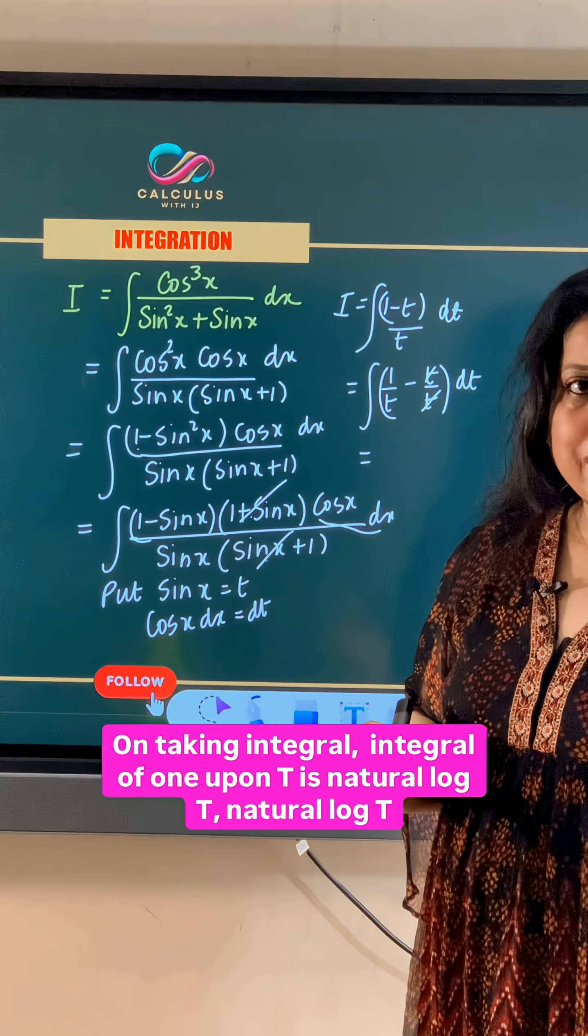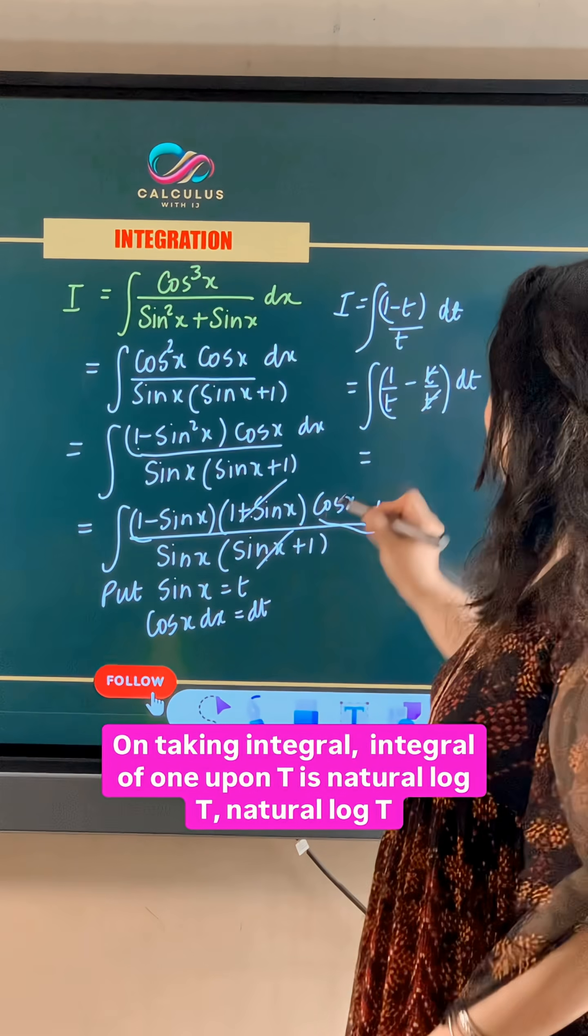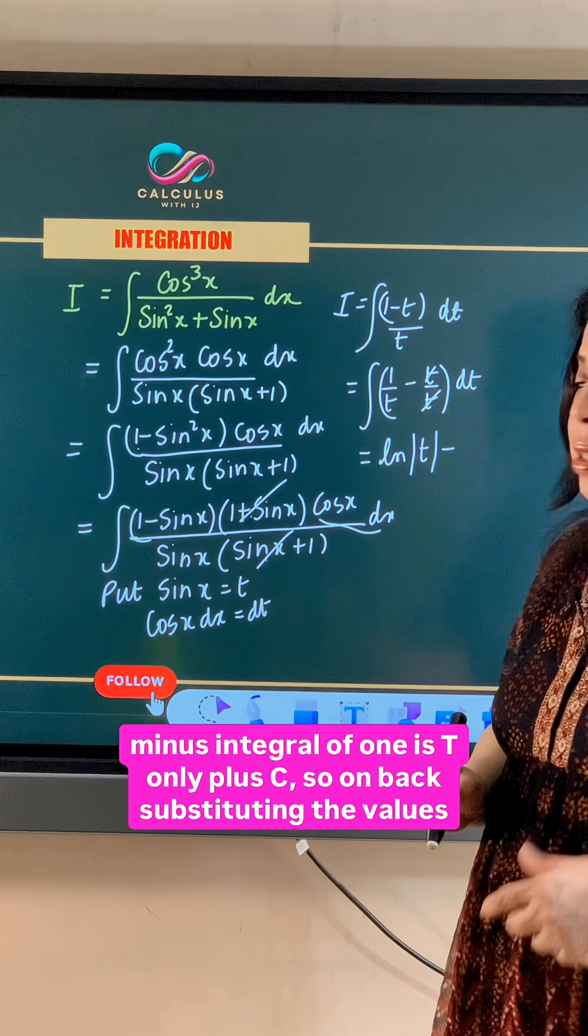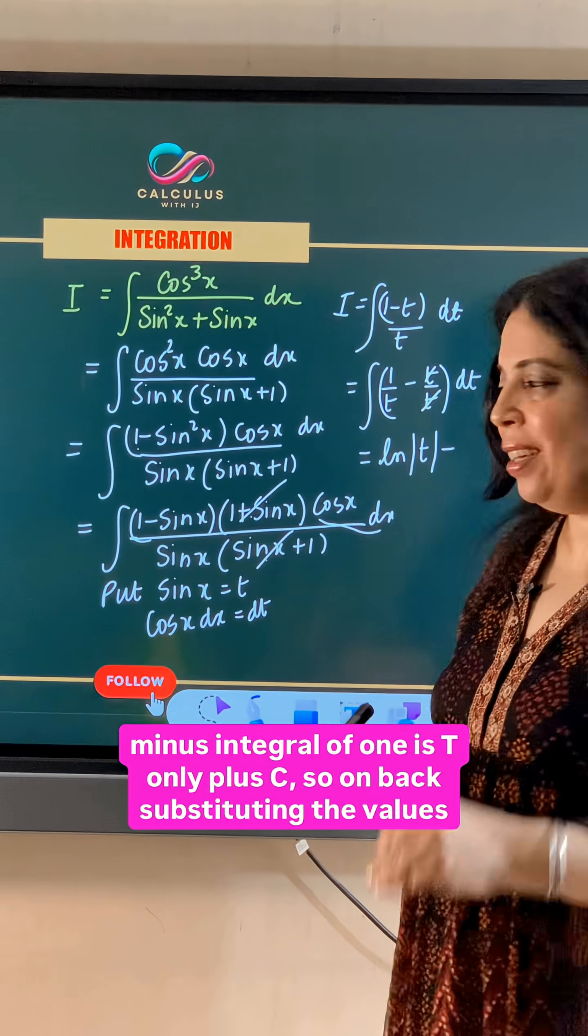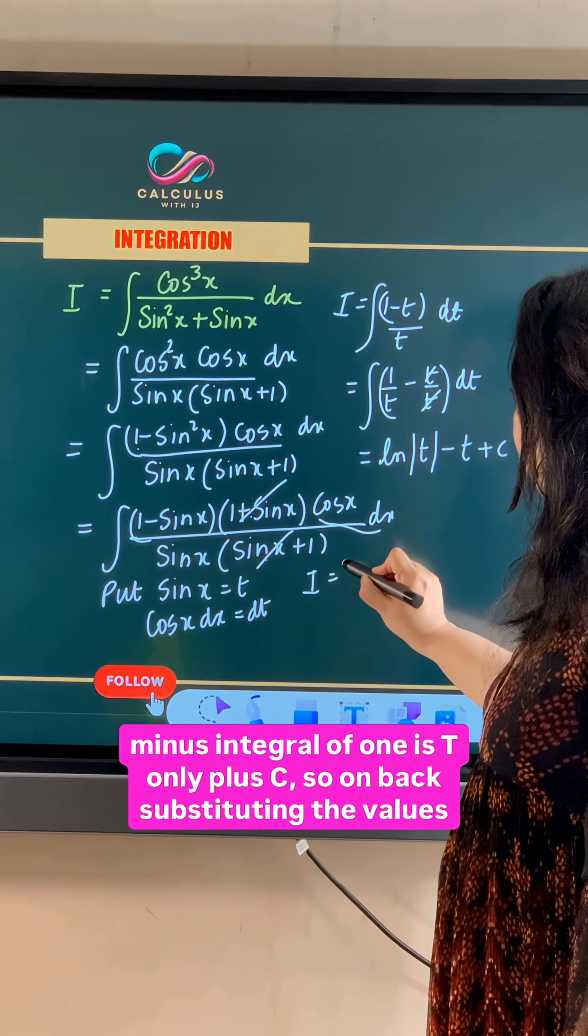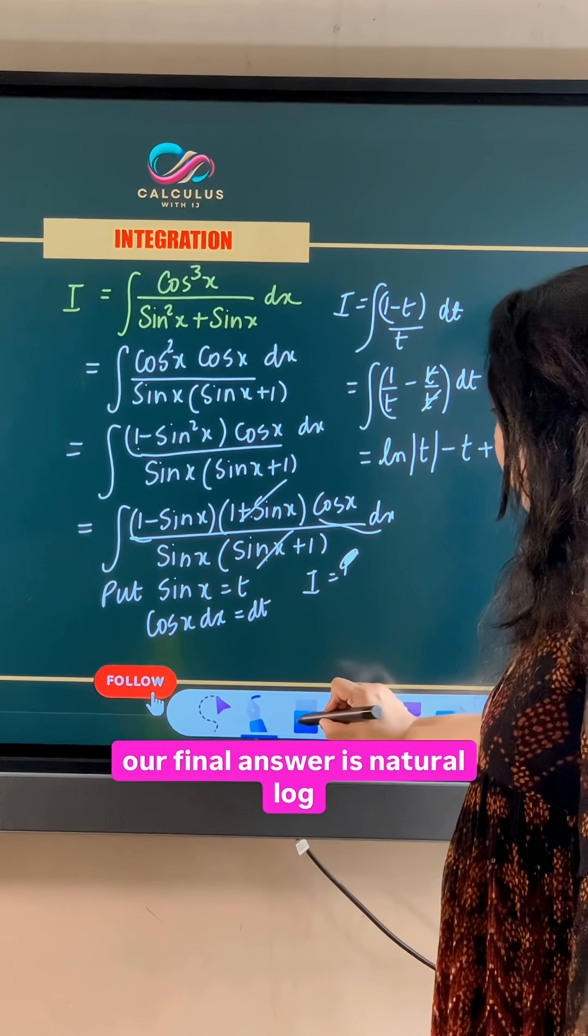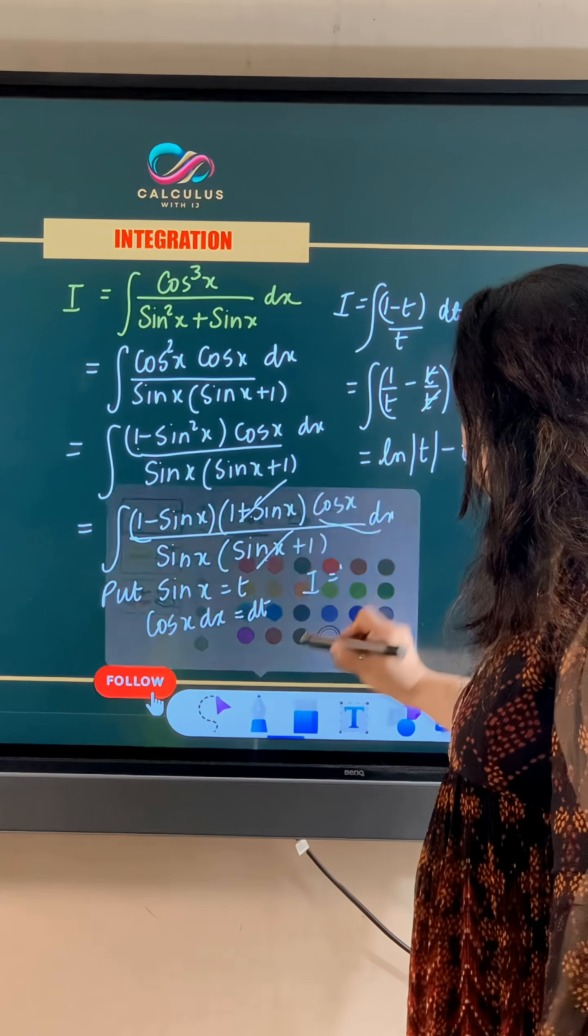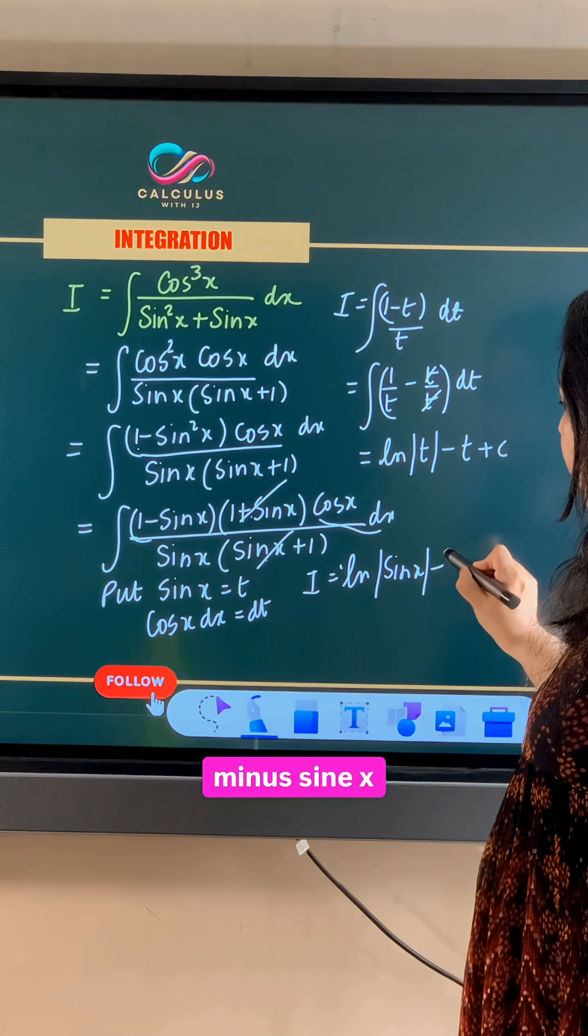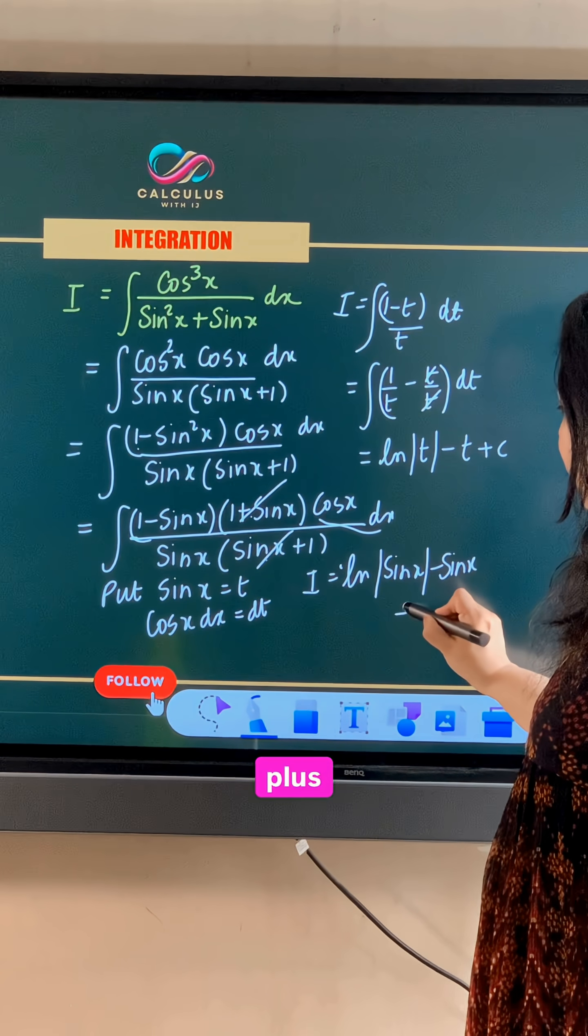On taking integral, integral of 1 upon t is natural log mod t, minus integral of 1 is t only, plus c. So on back substituting the values, our final answer is natural log mod sin x minus sin x plus c.